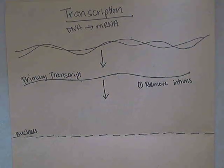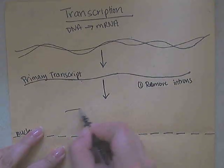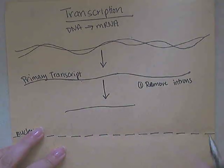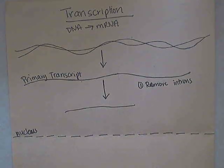Introns — just think of it as 'intrash' — introns are removed, and what's left over are known as exons. Exons are expressed, and those need to be glued together. When they are glued together, what you're left with is much shorter than the original primary transcript.